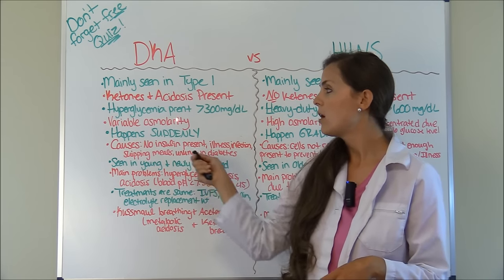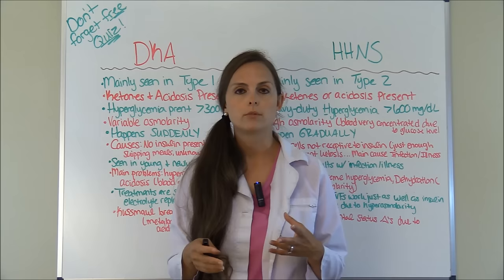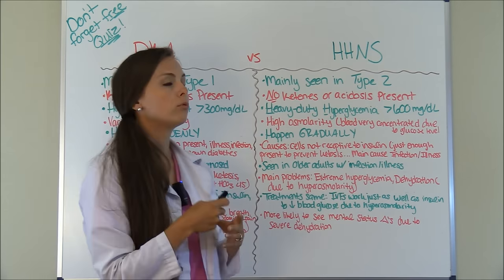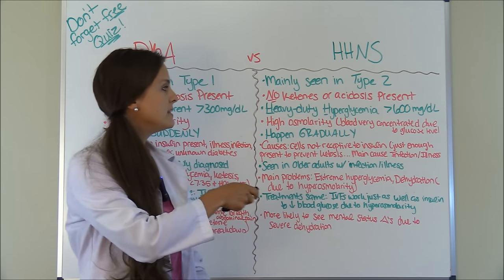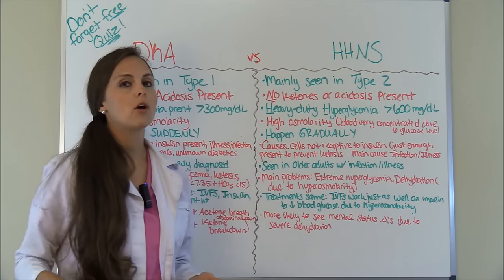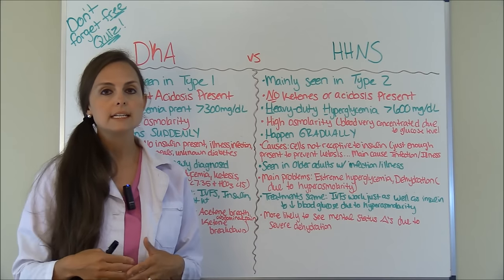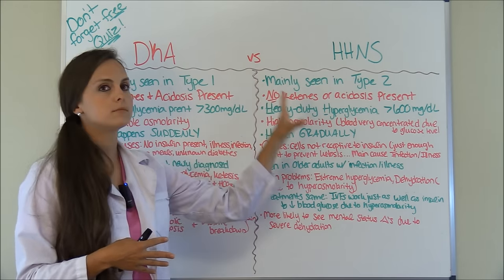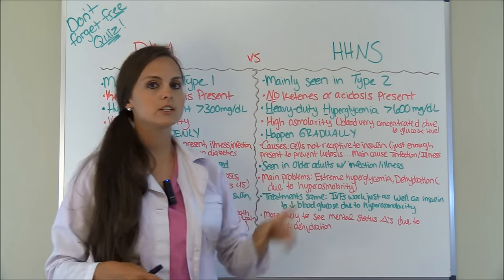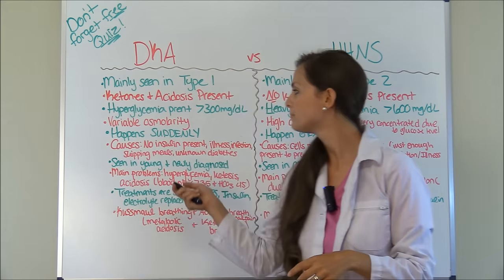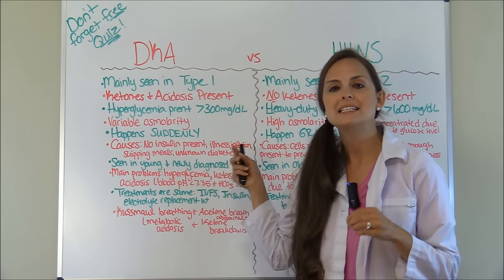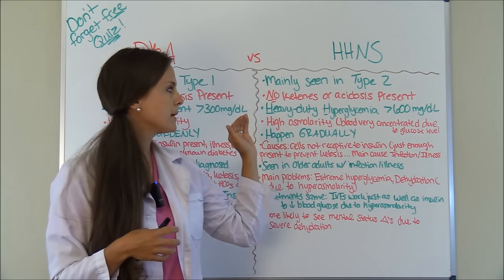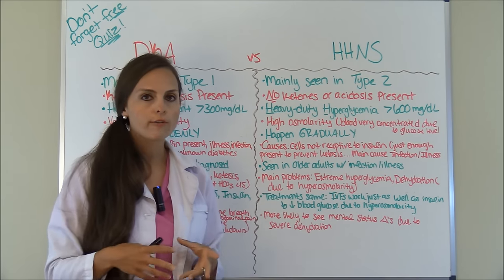In DKA, osmolarity is variable and not as much of an issue as it is in HHNS. In HHNS you're going to have really high osmolarity due to the blood being super concentrated with those extreme glucose levels, so you'll see more problems like dehydration from the osmolarity than in DKA. DKA happens suddenly and fast, whereas HHNS happens gradually over time.